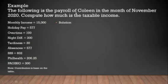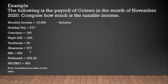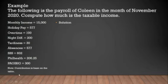The following is the payroll of Kulin in the month of November 2020. Compute how much is the taxable income. The given values are: monthly income = 15,000; holiday pay = 577; overtime = 100; night differential = 200; tardiness = 30; absences = 577; SSS = 602; PhilHealth = 206.25; Pag-ibig = 300. Note: SSS, Pag-ibig, and PhilHealth contributions are based on the contribution tables.